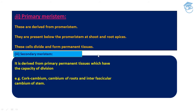Primary meristem is derived from pro meristem and is present below the pro meristem at shoot and root apices. These cells divide and form permanent tissue. When primary meristem keeps on dividing, it forms permanent tissue. Secondary meristem is derived from primary permanent tissue which has the capacity of division, such as cork cambium, cambium of root, and interfascicular cambium of stem — these are examples of secondary meristem.